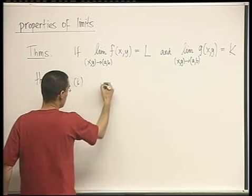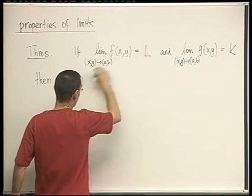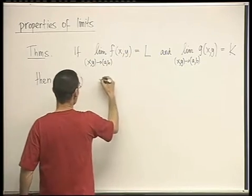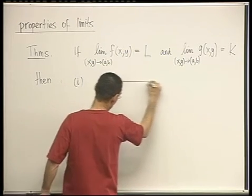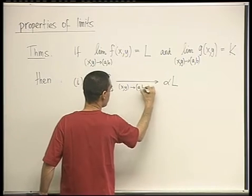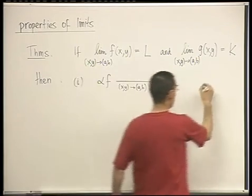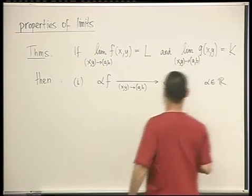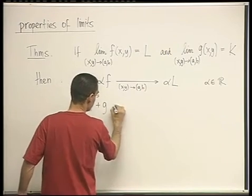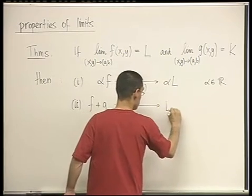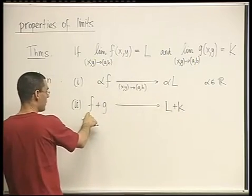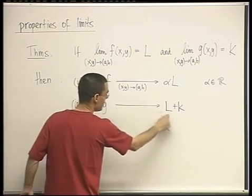So let's say 1, and I'm not going to write xy and xy goes to ab, I'm just going to write the arrows in order for not to make it too blurry here. So alpha times f converges to alpha times L. Let's maybe write xy goes to ab. And this is for any scalar alpha. And then the sum f plus g converges to L plus k.